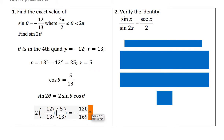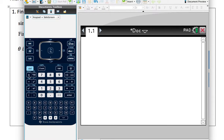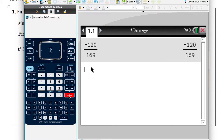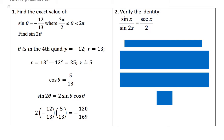We plug everything into our calculator and get 120 divided by 169. Unfortunately, I do not believe that is reducible. If you can reduce your ratio, go ahead and reduce it. But 120 over 169 is non-reducible, so just leave it as negative 120 over 169.